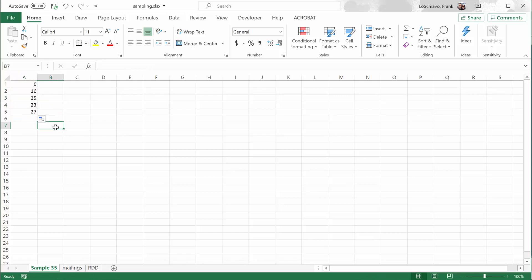And there we go. So we would select student number six, student number 16, 25, 23, and 27 randomly. So now we have a good random sample selected.